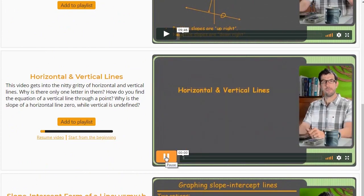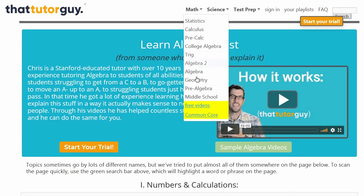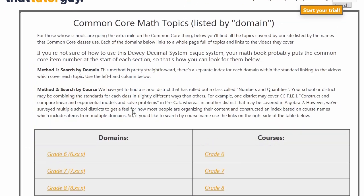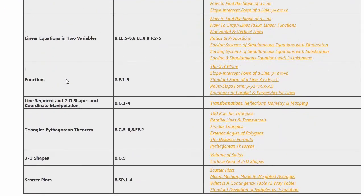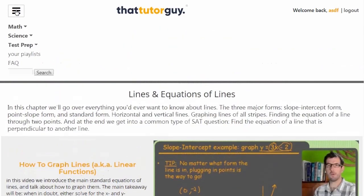Another easy way to find your topic is to go to our Common Core page where you can find topics using those little Dewey Decimal System type numbers that textbooks put at the start of every section these days.